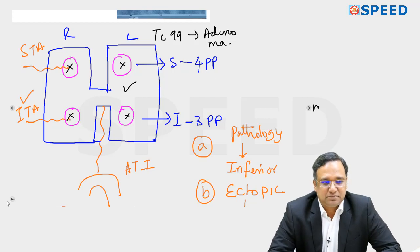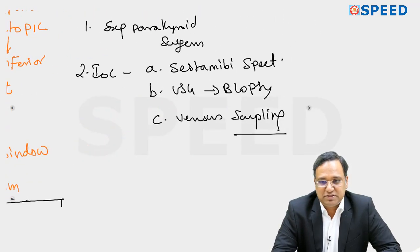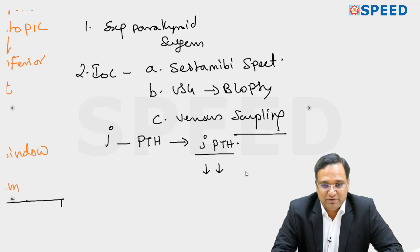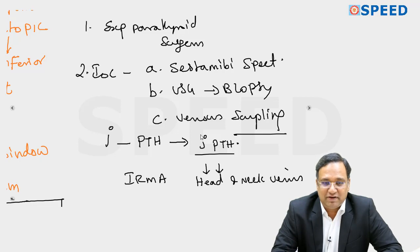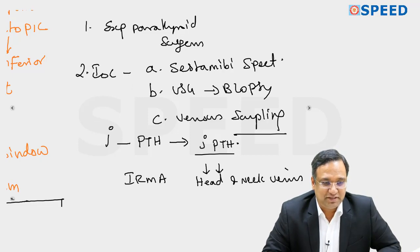The last method is venous sampling. From the head and neck veins, you inject a radioisotope, which combines with PTH to form intact PTH (IPTH). This IPTH is measured by venous sampling using a test called IRMA — immunoradiometric assay — allowing you to determine the value of IPTH and locate the pathology.